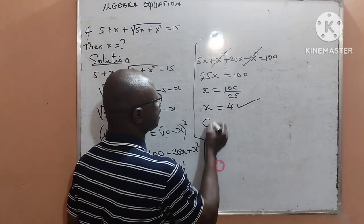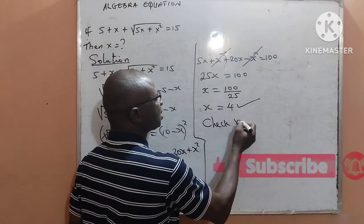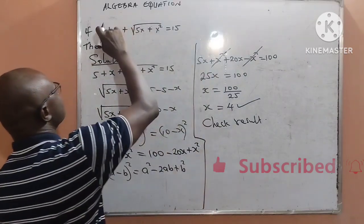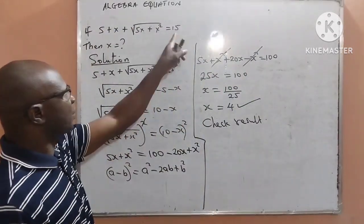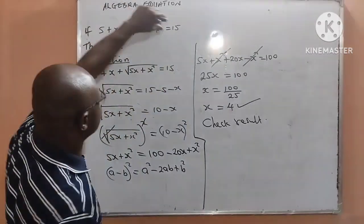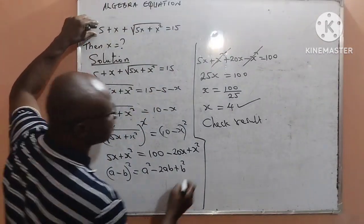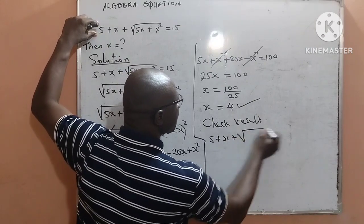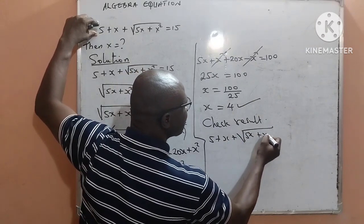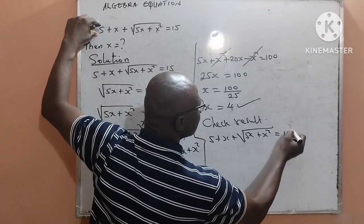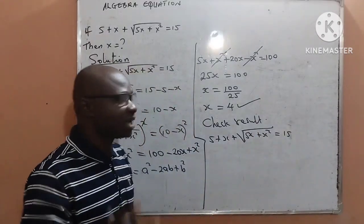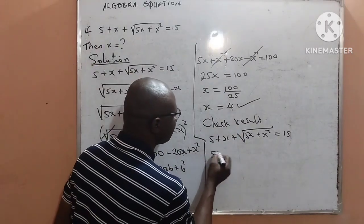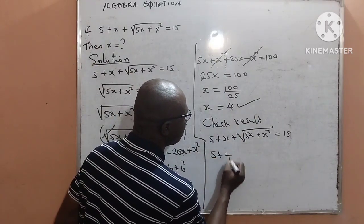Just a quick check result. We want to see if x is replaced into this equation will it be equal to 15 as given by the question. That means 5 plus x plus square root of 5x plus x squared, will this be equal to 15? Now let us replace x equal to 4: 5 plus 4 then plus square root of...